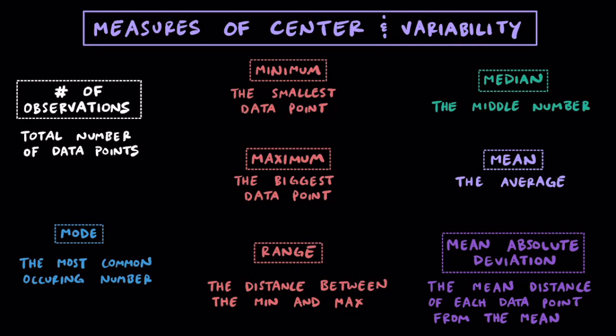And that wraps up this video on how to calculate basic measures of center and variability. While the mean, median, and mode help us identify where the center of data is, we look to calculate the range and the mean absolute deviation to see how much variability there is in a dataset. If we calculate a pretty large range or large MAD, it tells us the data is spread out. On the other hand, if those values are small relative to the data, the data is concentrated or close together. If you feel like you learned something from this video, it would really help if you could click the like button. Keep up the great work, and I'll see you in the next one.